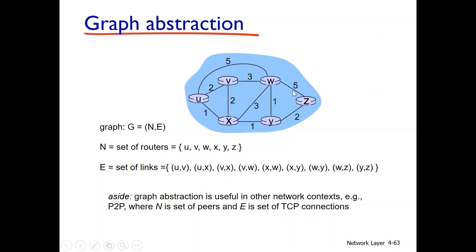The network is graphically represented as a data structure. The graph is G equal to (N, E), where N is a set of nodes or routers — U, V, W, X, Y, Z — and E is a set of links of the network, such as (U,V) and (U,X), representing direct connections.